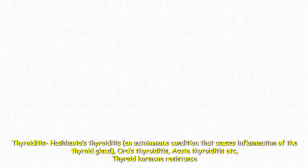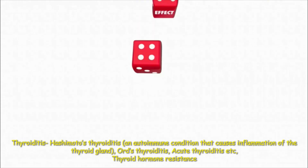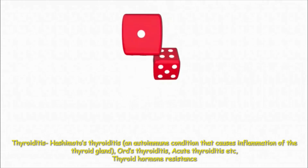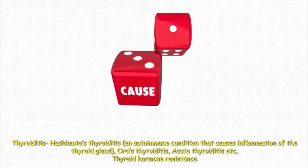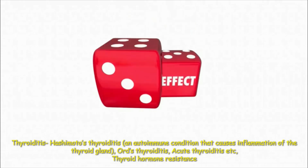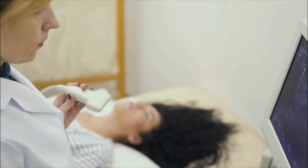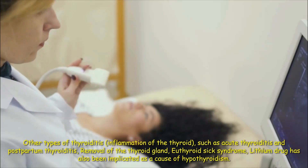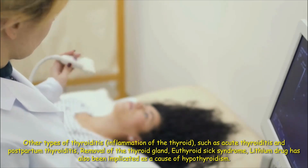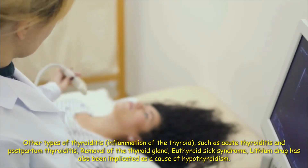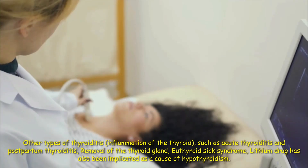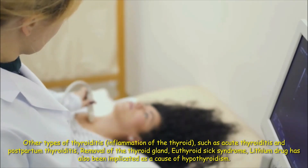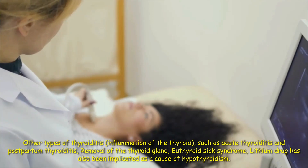What are the common causes of hypothyroidism? Thyroiditis, Hashimoto's thyroiditis — an autoimmune condition that causes inflammation of the thyroid gland — acute thyroiditis, thyroid hormone resistance, other types of thyroiditis such as postpartum thyroiditis, removal of the thyroid gland, euthyroid sick syndrome, and lithium drug, which has also been implicated as a cause of hypothyroidism.